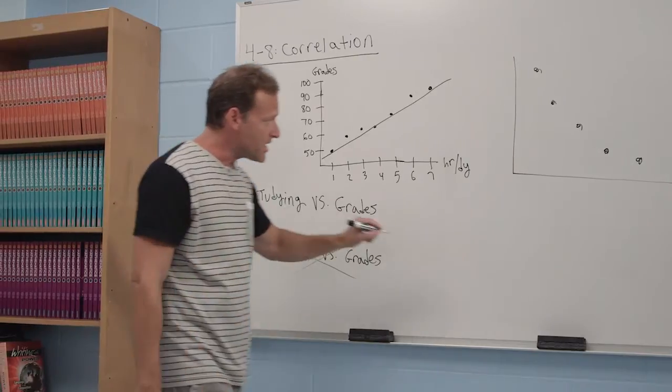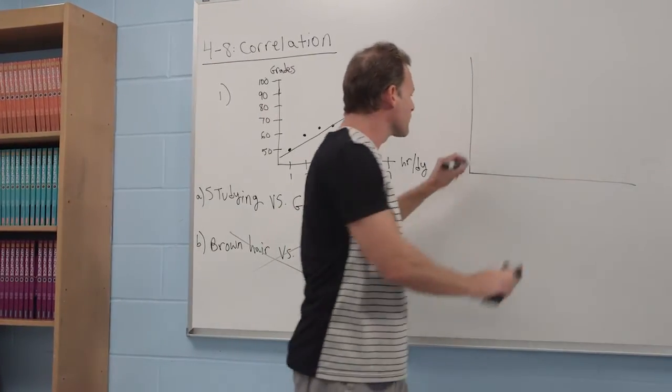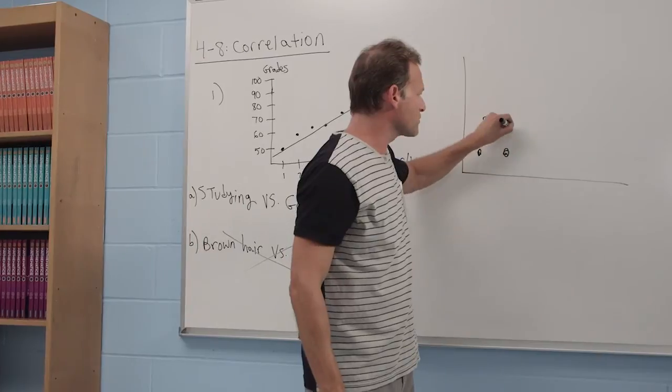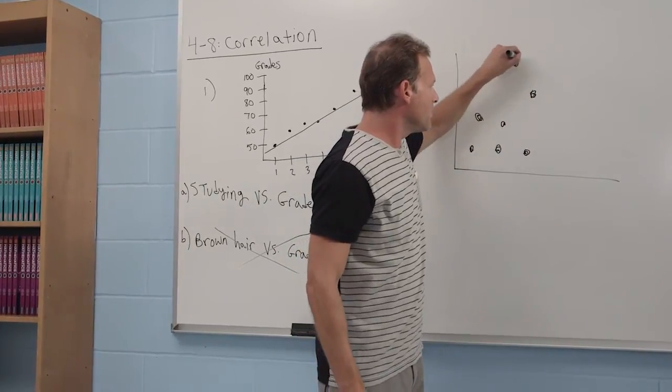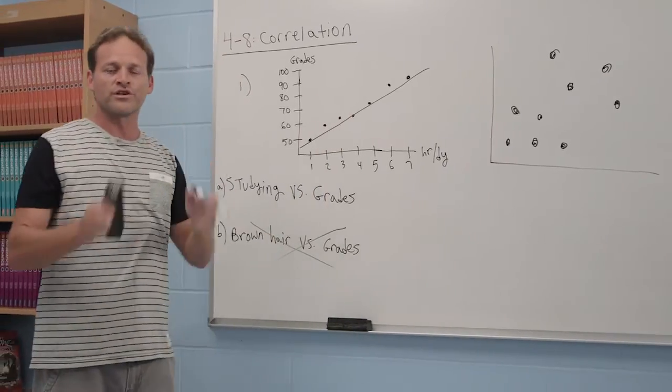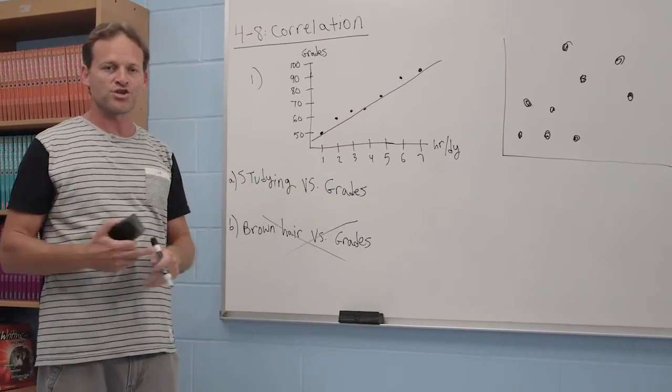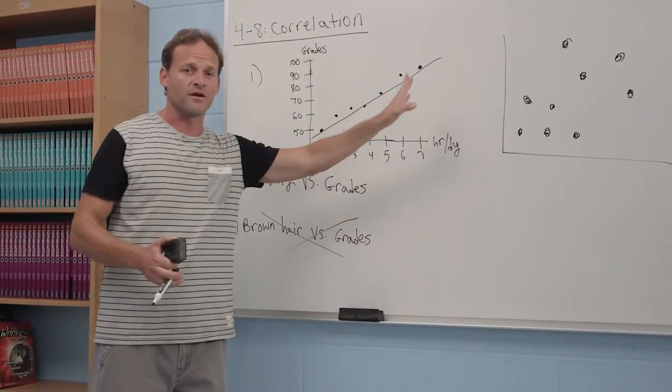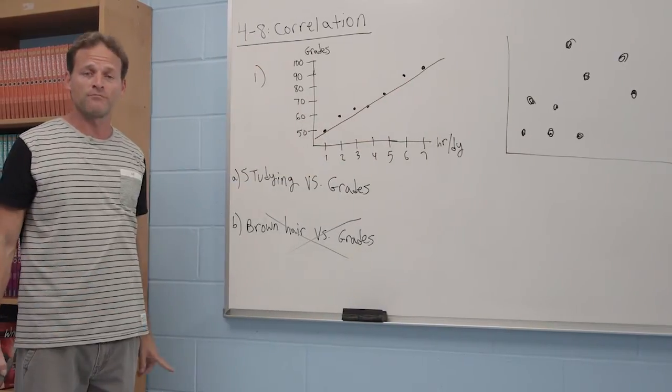But if you see a graph whose dots are all over the place, like this, and you don't see any discernible pattern, whatever the situation is, you can conclude there is no correlation. There is no relationship between these two things. That's what correlation means.